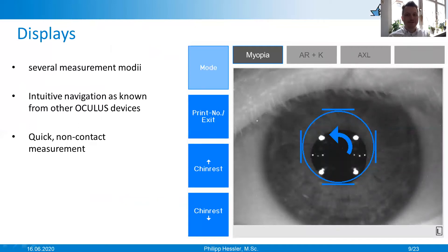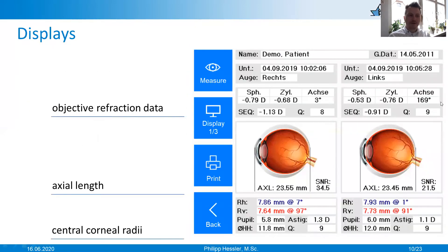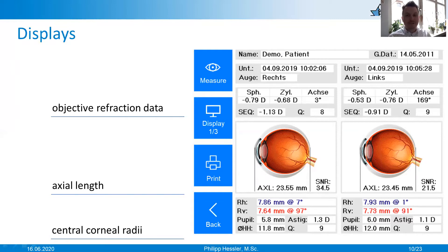Let us now take a brief look at the displays of the Myopia Master. You can select several measurement modes; navigation is very simple and self-explanatory as you know it from other Oculus devices such as the Keratograph 5M. The measurement is also very fast and non-invasive. After measurement, we see the first result display, which includes general data, objective refraction data, and images of the eye. There must also be a rethink in our communication with the patient — eye specialists usually only talk about diopters, but we have to start talking to patients about millimeter values, because we have to make it clear that length growth is important, and this picture helps to do that.